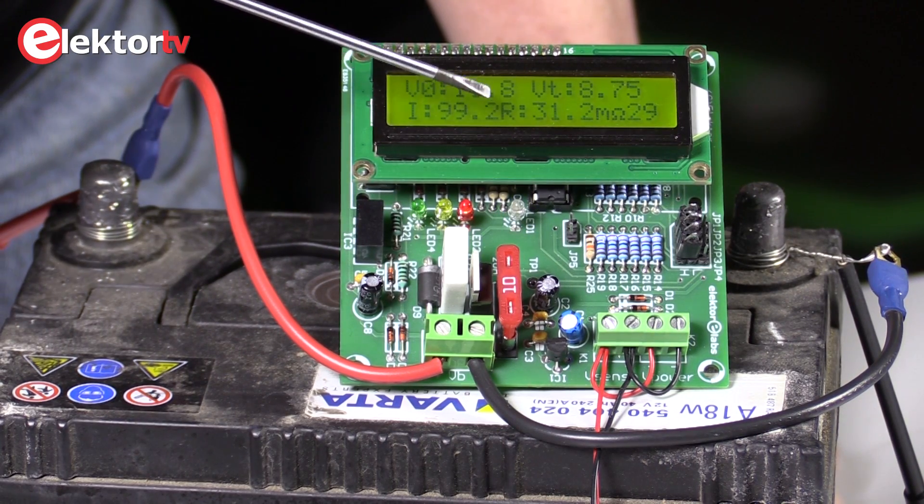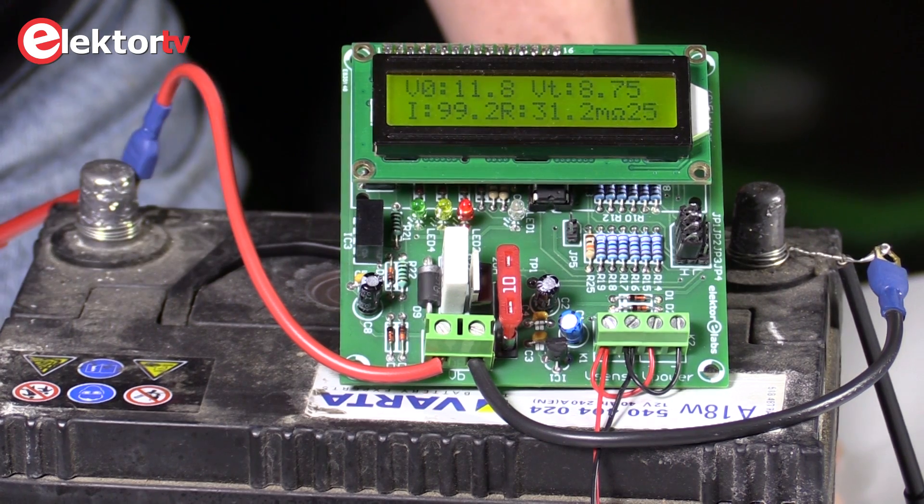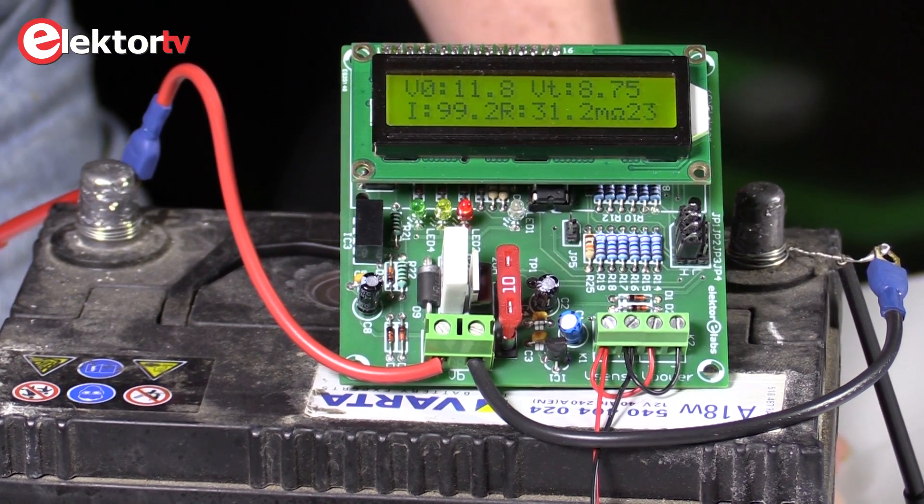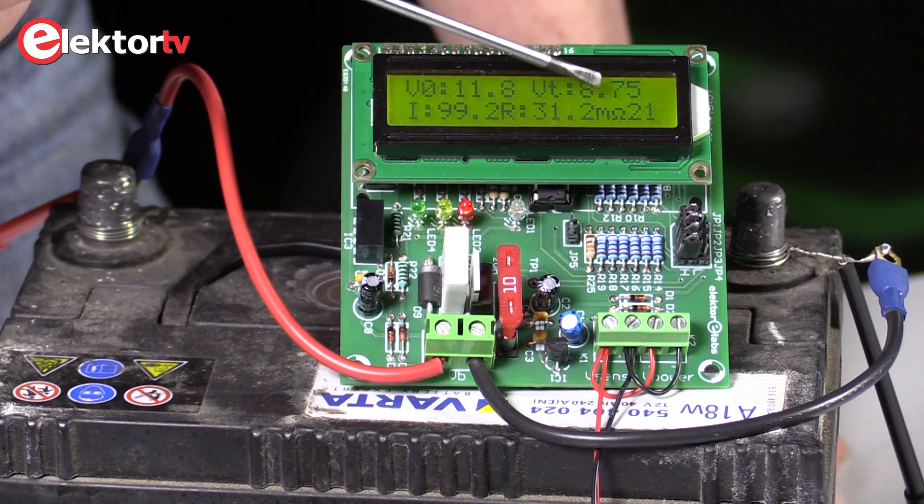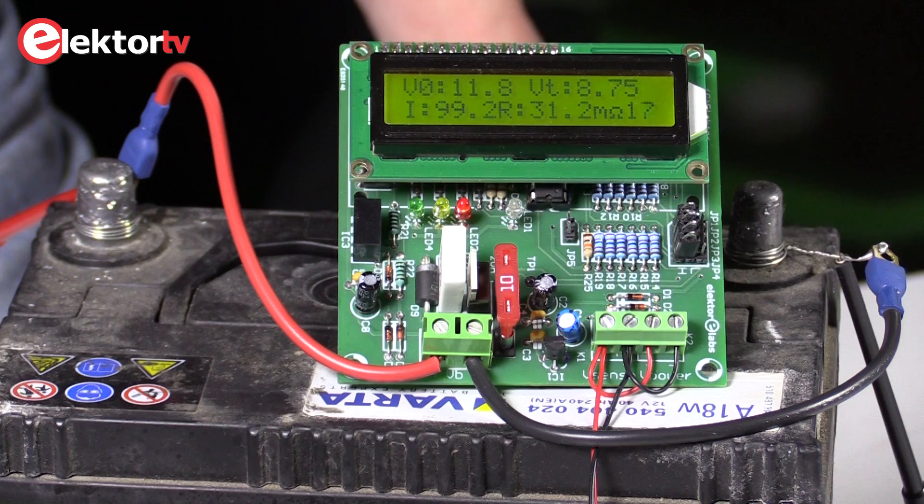And we measure about 30 milliohm resistance, internal resistance of the battery. And here you see a counter that is counting down between two subsequent pulses.